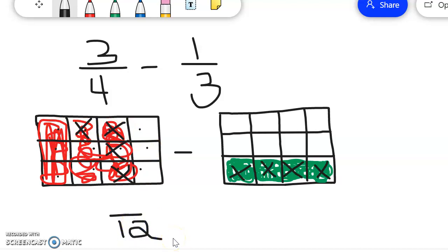And then the number of colored in parts that don't have an X on them is my numerator. One, two, three, four, five. So my answer is five twelfths.